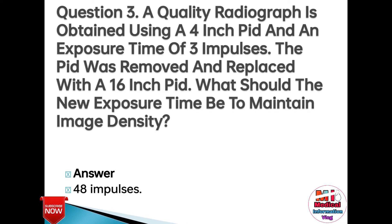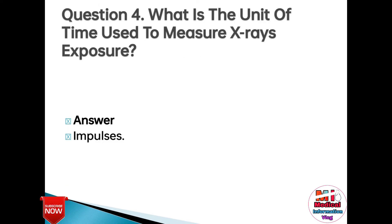Question 3: A quality radiograph is obtained using a 4-inch PID and an exposure time of 3 impulses. The PID was removed and replaced with a 16-inch PID. What should the new exposure time be to maintain image density? Answer: 48 impulses.